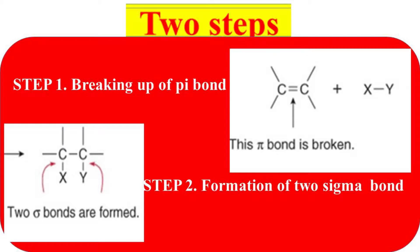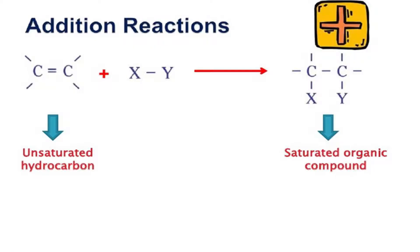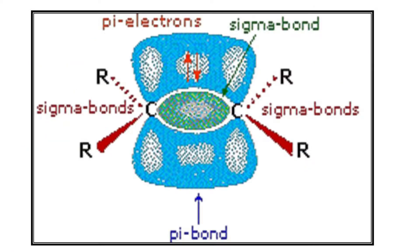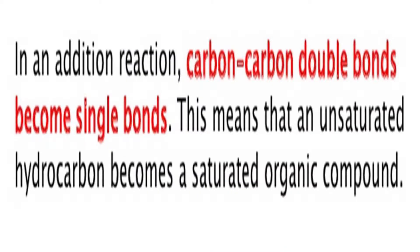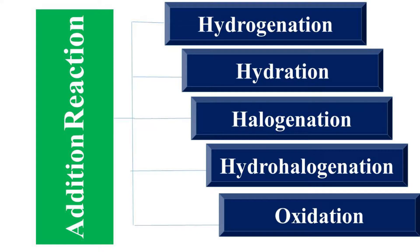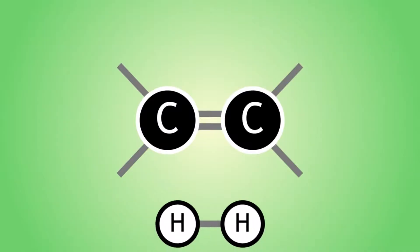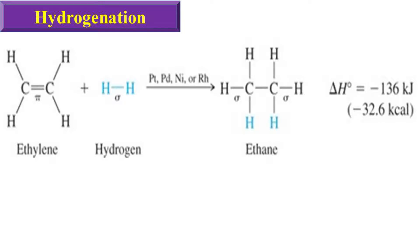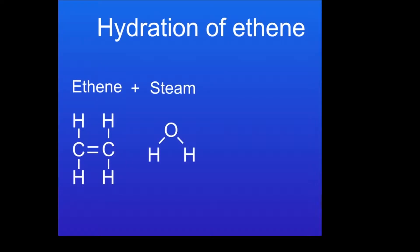In general, there are two steps involved in the addition reactions. Step one is the breaking up of the pi bond, and step two is the formation of new sigma bonds. Basically, in addition reactions the carbon-carbon double bonds become single bonds — that is, an unsaturated hydrocarbon is converted to a saturated hydrocarbon. Here are some cases of addition reactions of alkenes, such as hydrogenation.